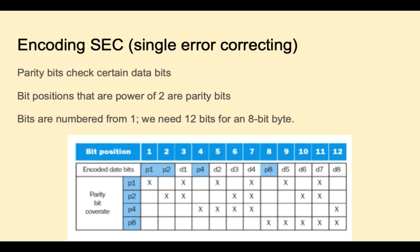This example from my book shows how a single error correcting system would work. We're going to have extra parity bits that check the data bits. Normally we number our bits from right to left starting at zero, but this example numbers bits left to right starting from one. For an eight-bit byte, we have eight data bits, D1 through D8, and interspersed in there will be some parity bits at bit positions that are powers of two: 2^0, 2^1, 2^2, 2^3. These parity bits have a responsibility to check themselves along with certain data bits, and each data bit is checked by at least two parity bits — that redundancy makes this work.